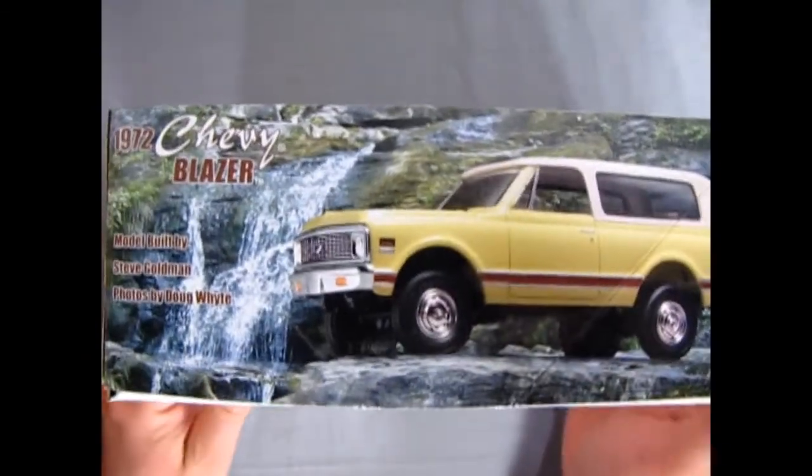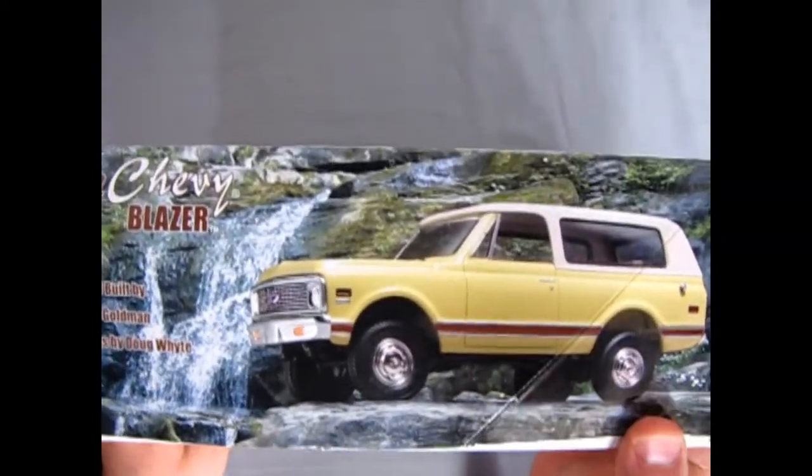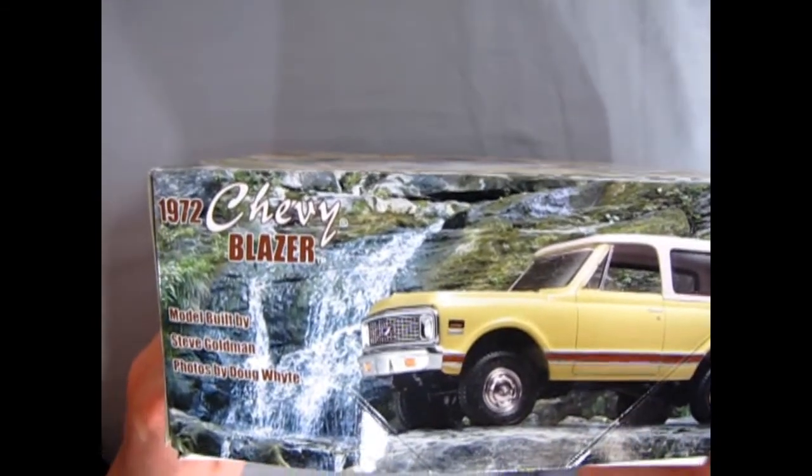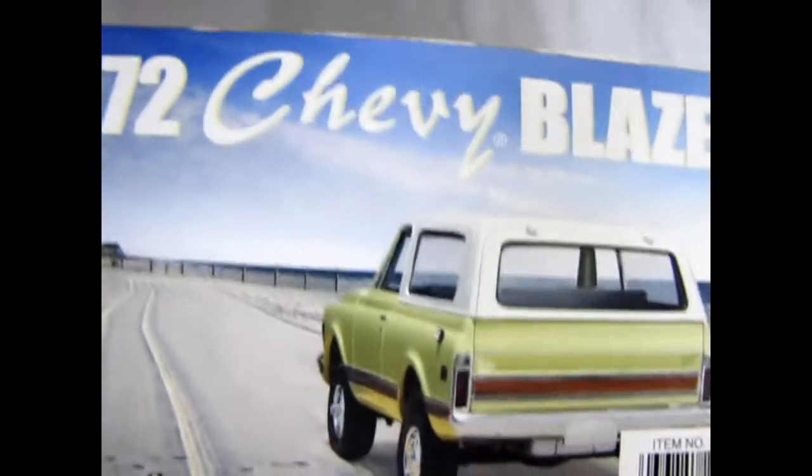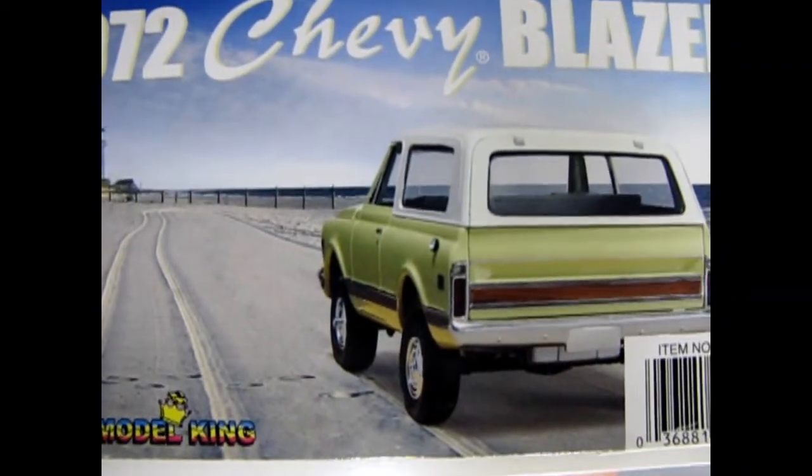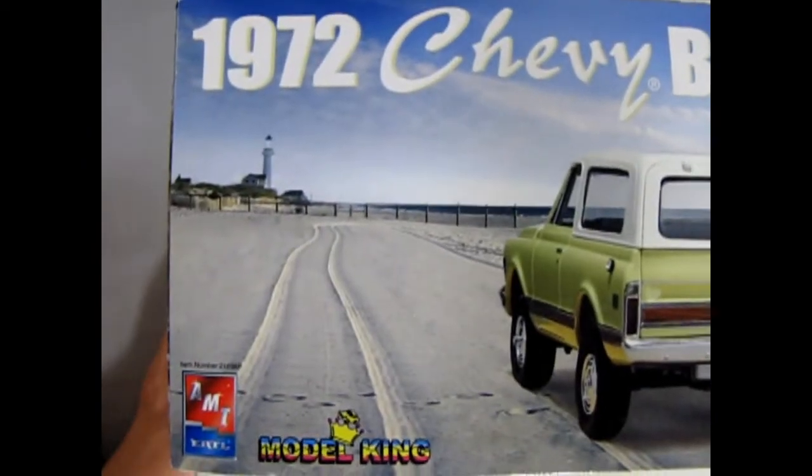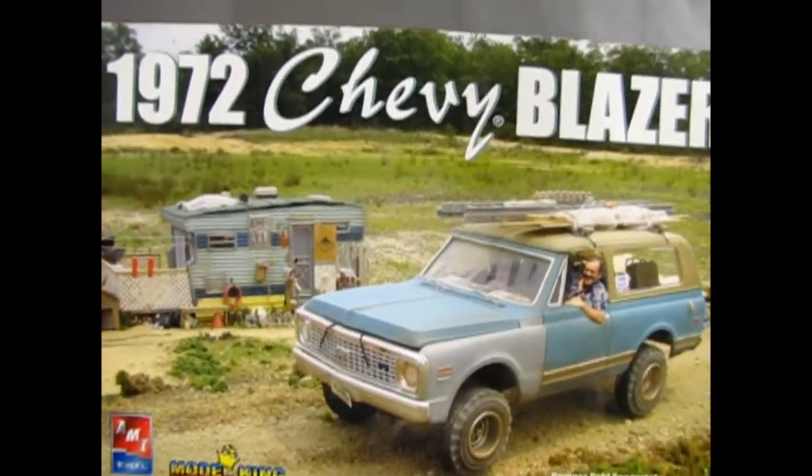Some pretty cool looking pictures of all this out in the rugged country. There's the stock version of the blazer. As you can see, pretty nice. Model built by Steve Goldman. Photos by Doug White. Pretty cool stuff on this box. And then on this end, you get to see the stock blazer driving off down along the seacoast here. So let's see what's inside here.